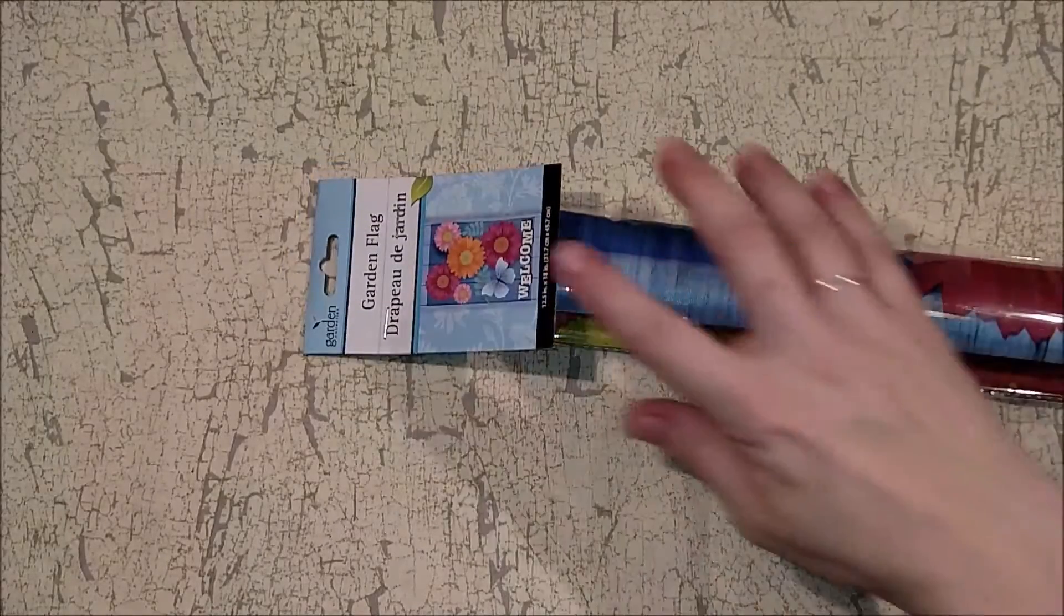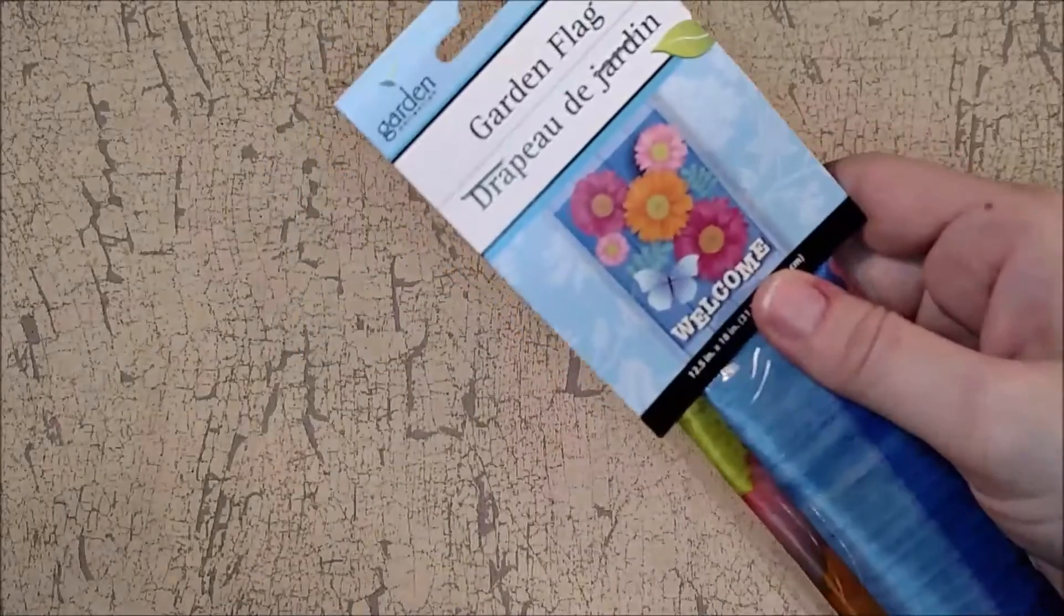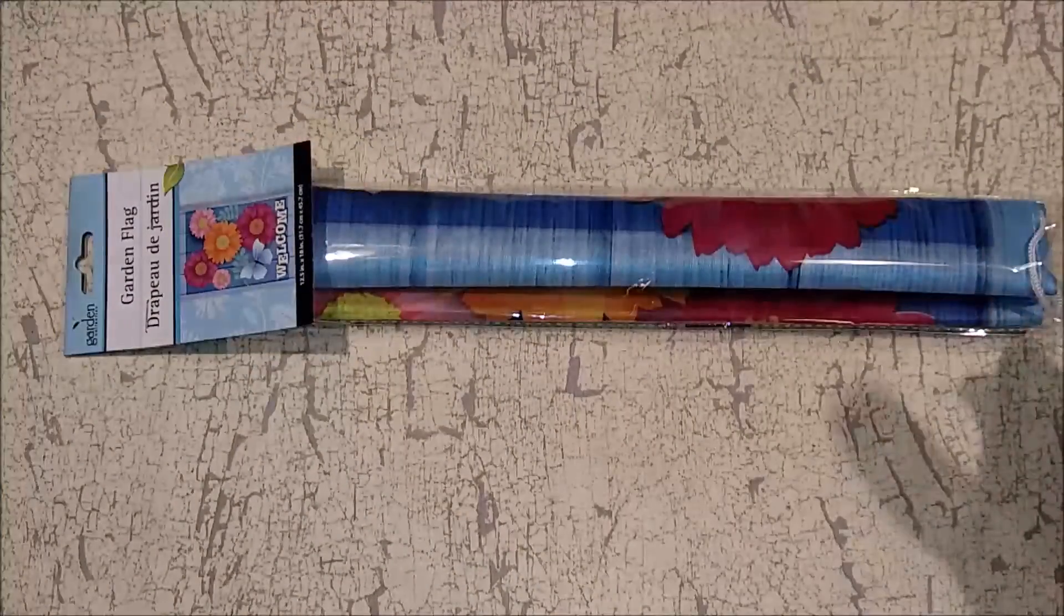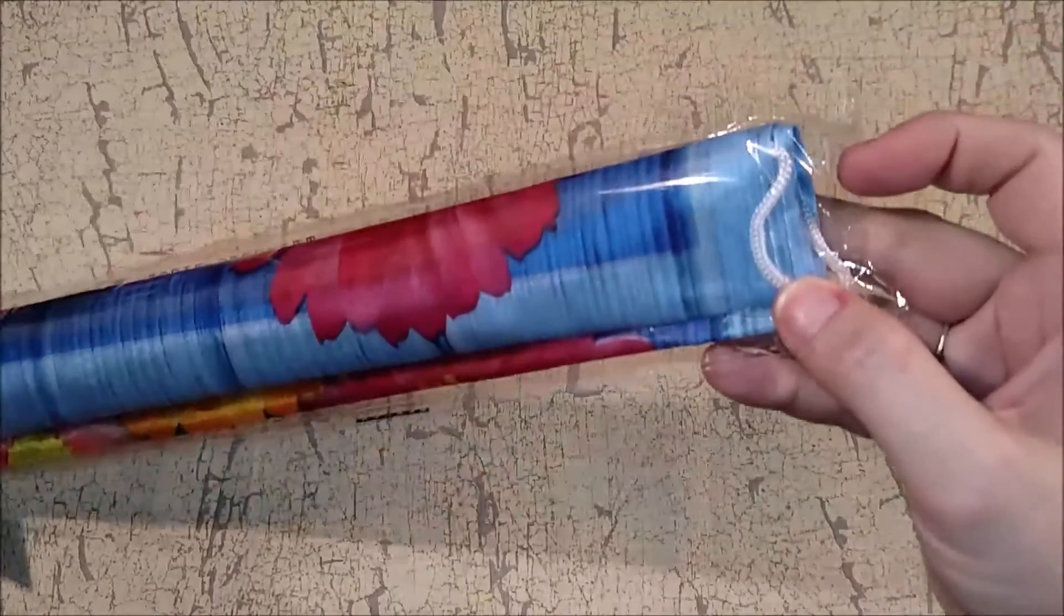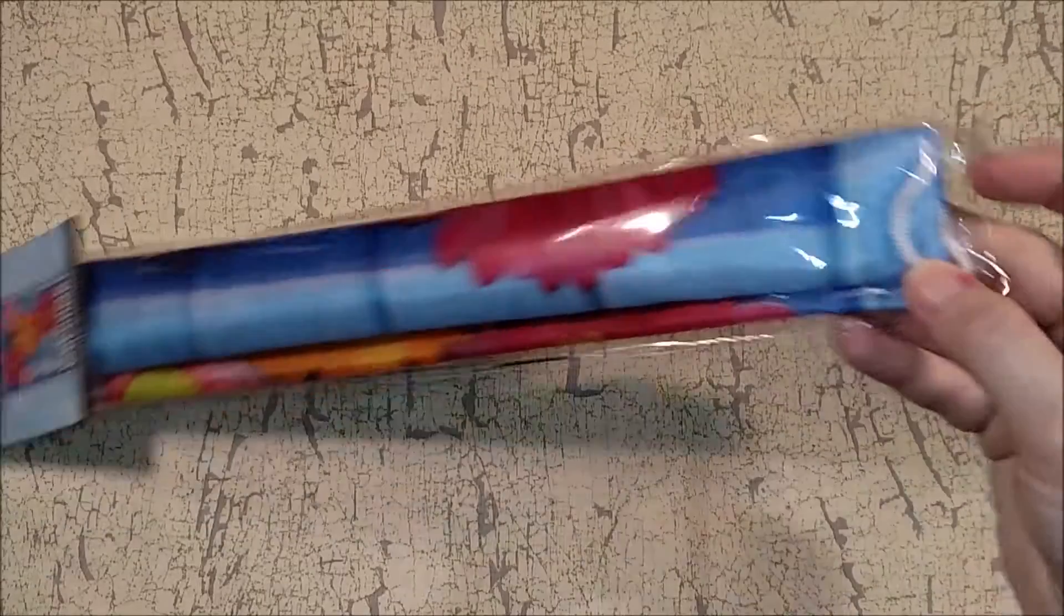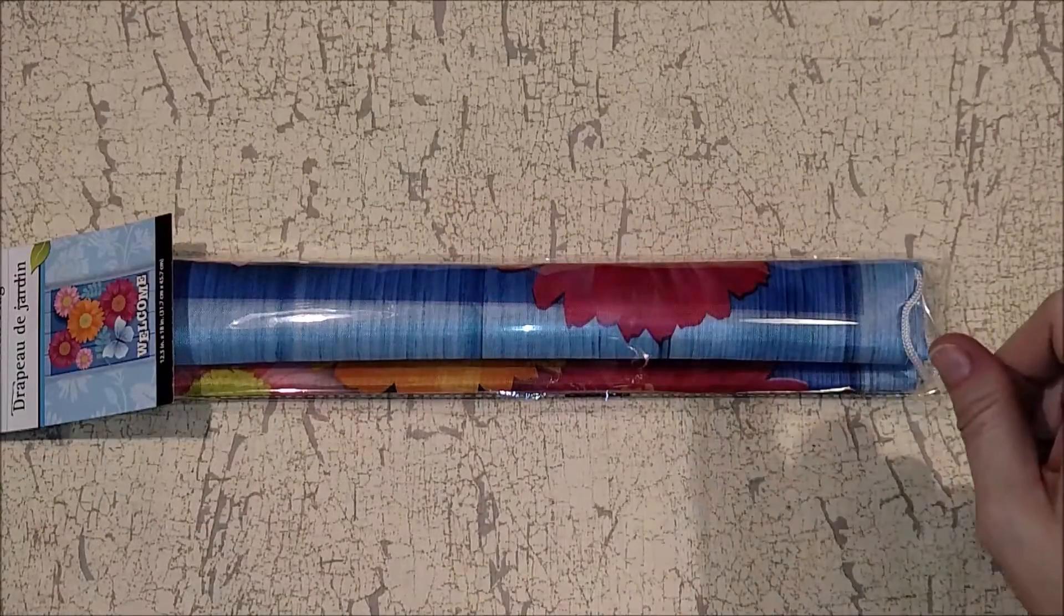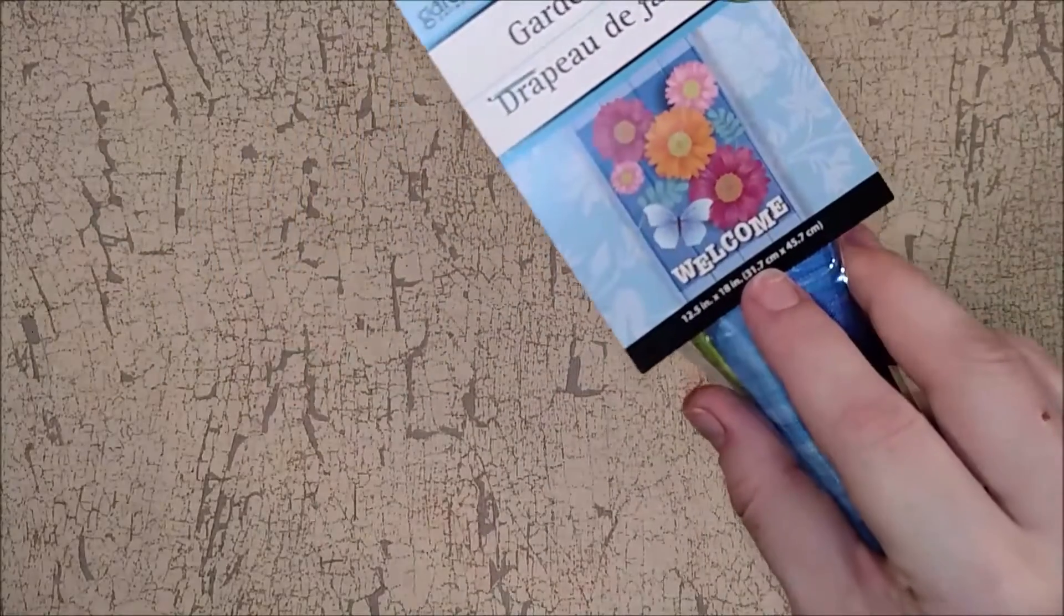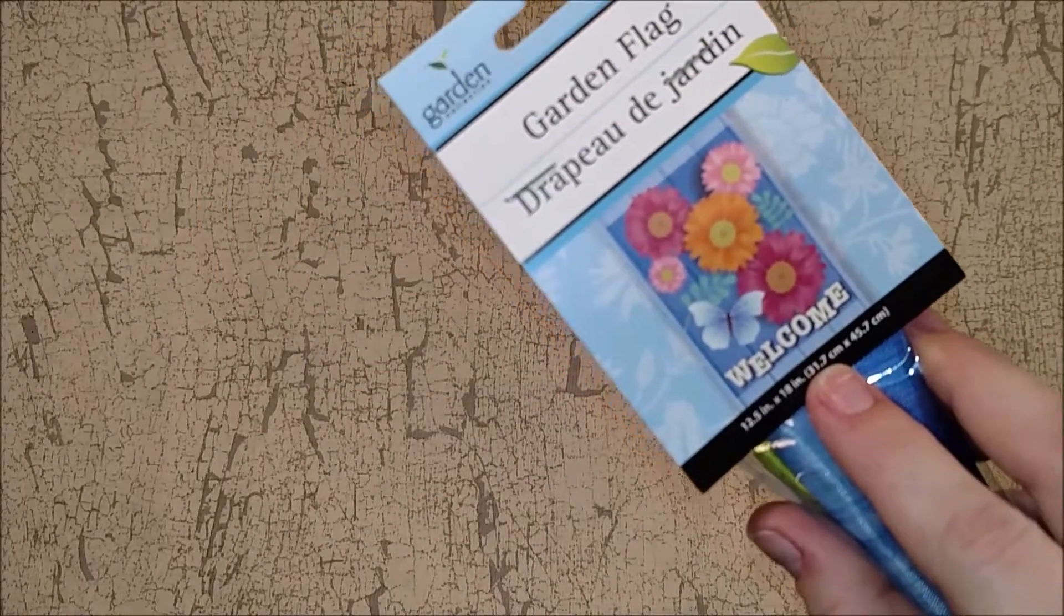So the first thing that I got was this cute little flag. It says welcome. These come with a little rope on them with a plastic tube through them. I just cut that off and put it on the mini flag stand thing that goes in the ground. And this one has little flowers and a butterfly. It says welcome! How cute.